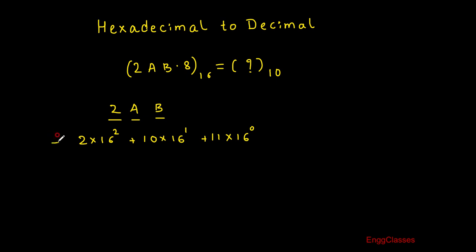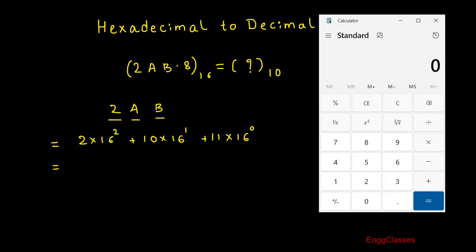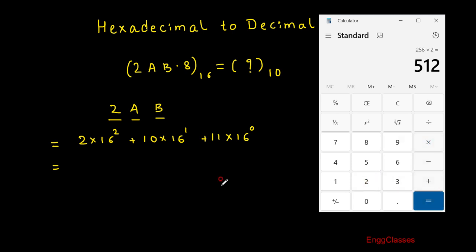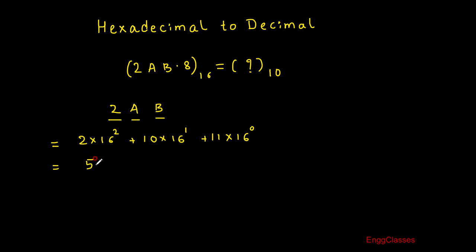What is 16 to the power 2? Let me use the calculator: 16 into 16 gives 256. That gets multiplied by 2, so I get 512. Let me write 512 here.